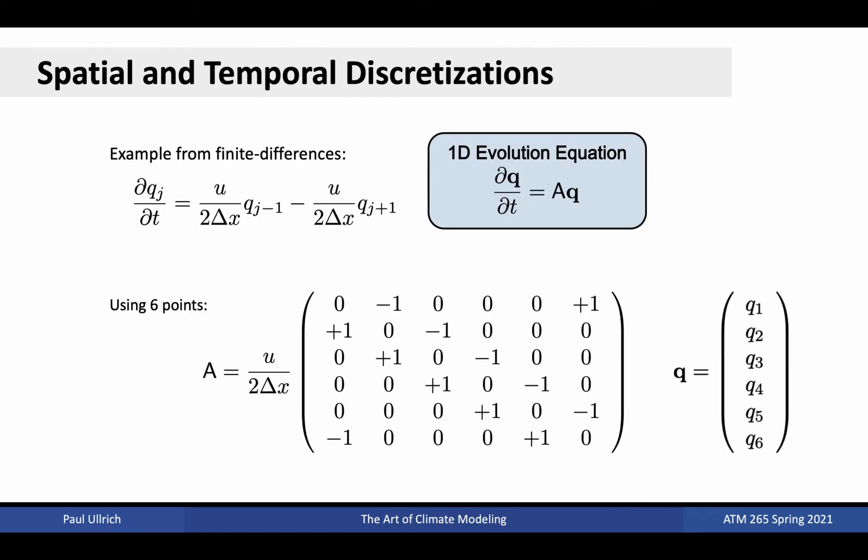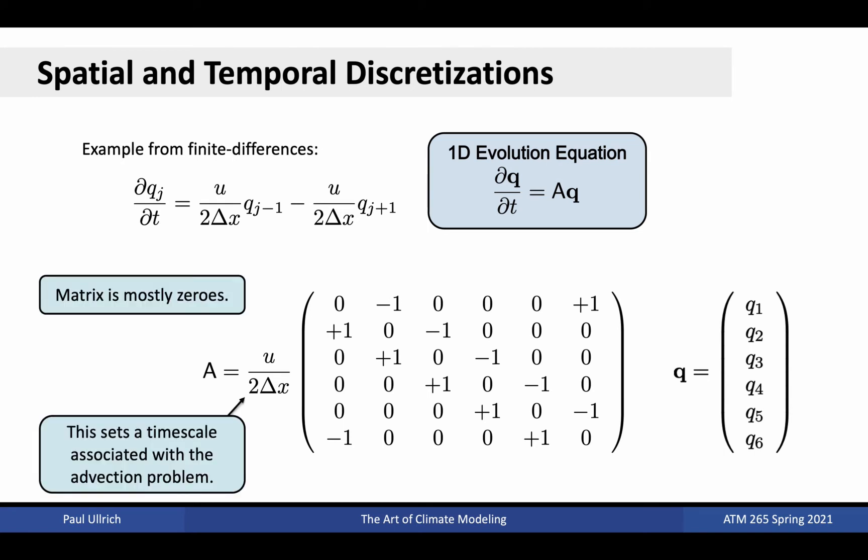Consider again our finite difference discretization with central differences operator. If applied over six data points in a periodic domain, the evolution matrix would appear like the array below. The matrix is always square as it denotes the effect of each data point on each of the other data points. There are a few things to note about this system. First, observe that the matrix is mostly zeros. The only non-zero elements appear to the right and left of the diagonal. The exception to this is at the top right and bottom left corner, where the non-zero elements are present because of the periodic boundary condition.